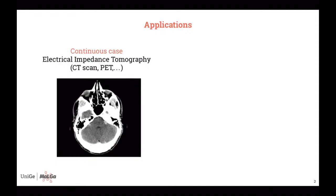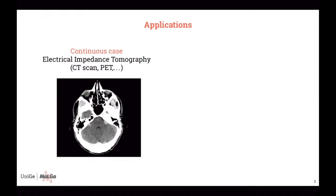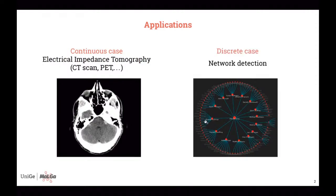In recent years, the Radon transform has also been defined on discrete sets — for example on graphs, and in particular on trees, as in this image. With the same philosophy, a sort of discrete tomography has been developed. The goal of this approach is to understand a signal on a graph or tree knowing only some information such as the average of the signal on a family of paths. It also uses a reconstruction formula for the Radon transform, but defined on a discrete set.